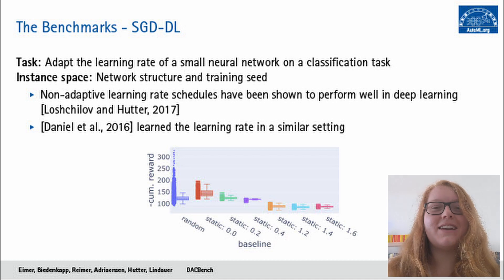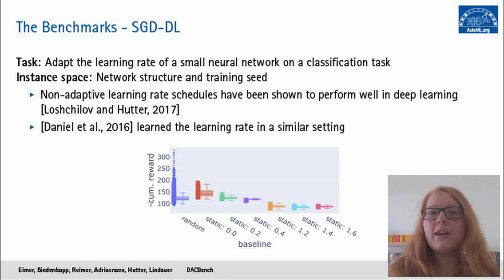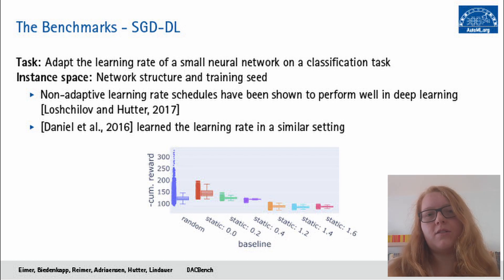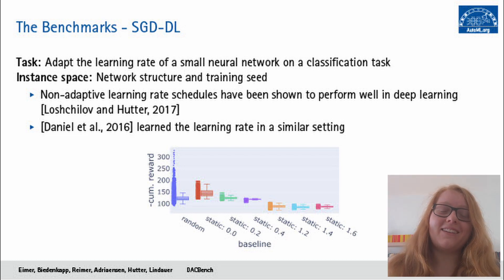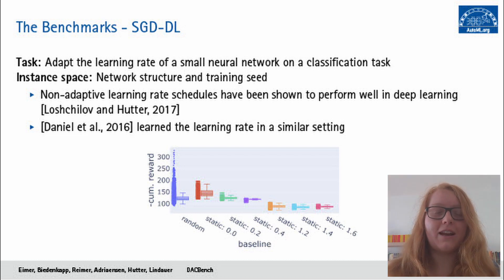Our last benchmark is the S2DDL benchmark — Stochastic Gradient Descent in Deep Learning. As the name suggests, we adapt the learning rate of a small neural network in a classification task. The network structure and training seed can be adapted, so we learn across a set of architectures. In deep learning, non-adaptive learning rate schedules conditioned only on time, like cosine annealing, have been quite successful, but we have also seen that the learning rate can be learned. Interestingly, this is a special case: the dynamic random policy performs considerably worse in the worst case than all other static policies, which we haven't seen so far. It doesn't seem very easy to dynamically configure all instances of the S2DDL benchmark — this is more of a generalization challenge.